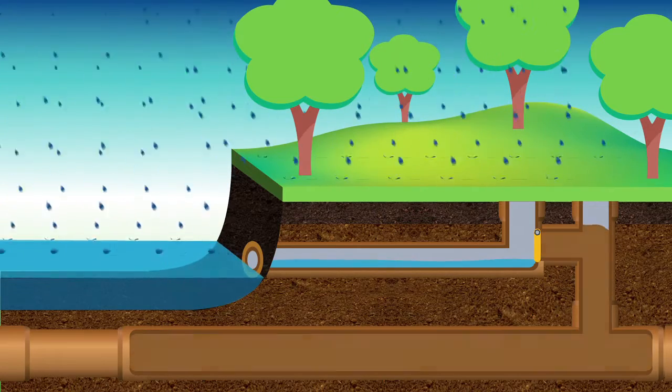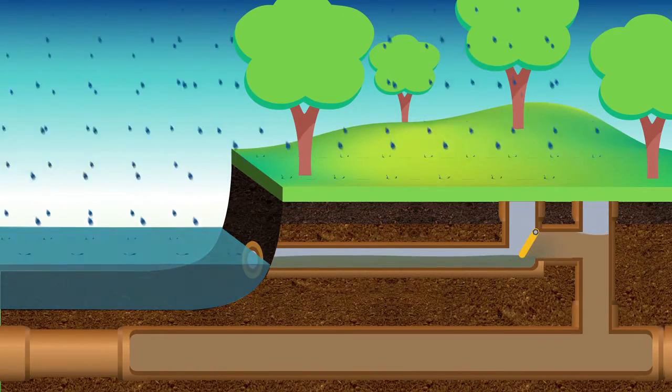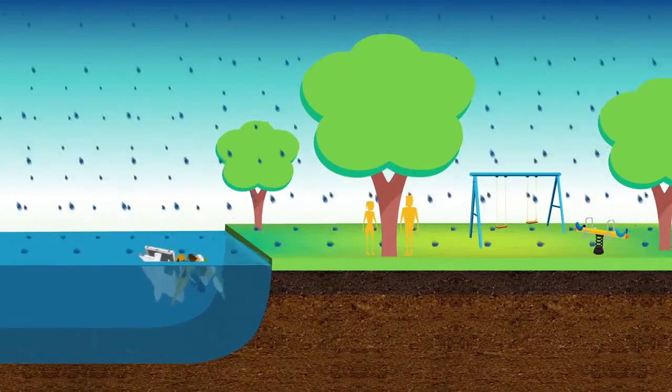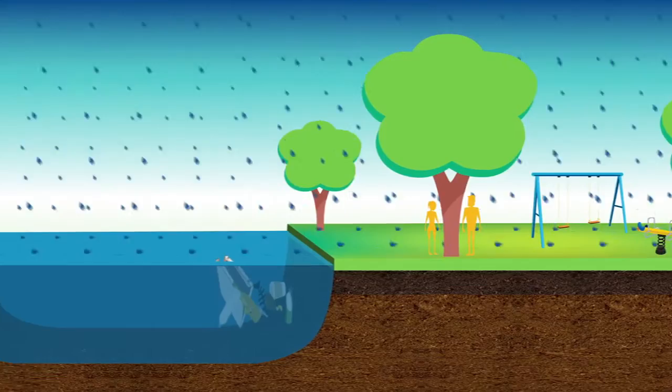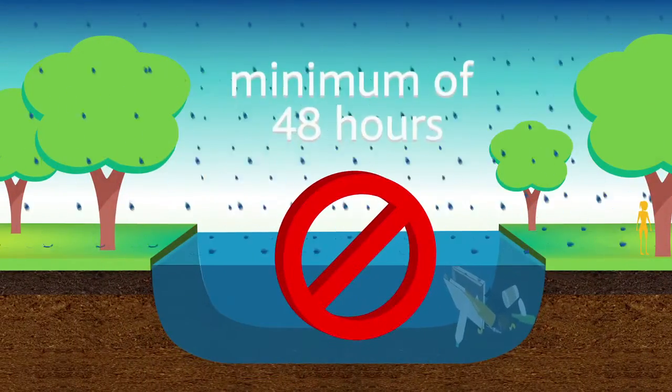Once, as the sewage in the pipes is diluted by the rain, and twice, as it's diluted by the river water. And as this extra rainwater contains contaminants from riverbanks and roads, such as litter and other pollutants, it's recommended that people avoid all contact for a minimum of 48 hours.